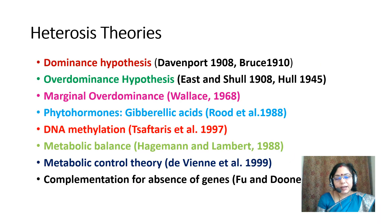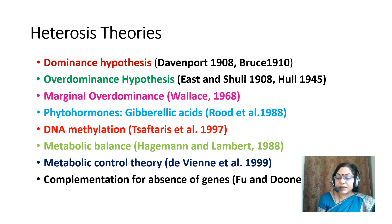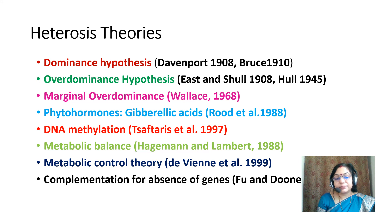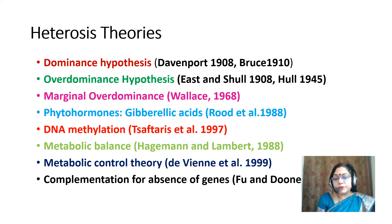Heterosis theories include: the dominance hypothesis, given by Davenport in 1908 and Bruce in 1910; the overdominance hypothesis, given by Hull in 1945 and Crow in 1948; marginal overdominance, given by Welles in 1968; phytohormones — specifically gibberellic acid — given by Rood et al. in 1988; DNA methylation, given by Safteris et al. in 1997; metabolic balance by Hegeman and Lampert in 1988; metabolic control theory by D. Vene in 1999; and complementation for absence of gene by Few and Donor in 2000.